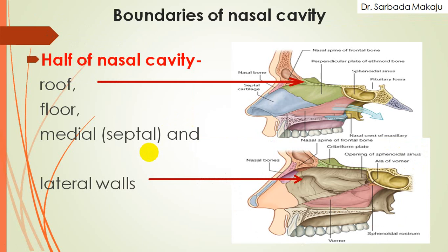Now the boundaries of the nasal cavity. Each half of the nasal cavity has the following boundaries: the nasal septum divides the nasal cavity into two equal halves. This portion is known as the roof, this portion is known as the floor, this portion is known as the medial wall, and after removing the medial wall, there is one more wall known as the lateral wall. The medial wall is single because it is the partition between the nasal cavities, whereas the lateral walls are two — the right lateral wall and the left lateral wall.